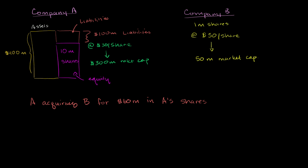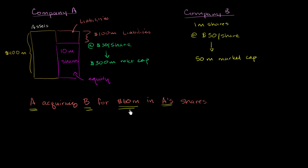What I want to do in this video is try to understand how one company can buy another company, or can merge with another company, by using its stock. We have a situation here where Company A is acquiring Company B for $60 million in A's shares. And what we'll see is it's not going to exactly be $60 million — it'll depend on where Company A's shares trade.